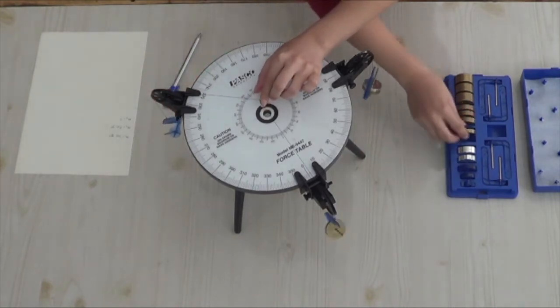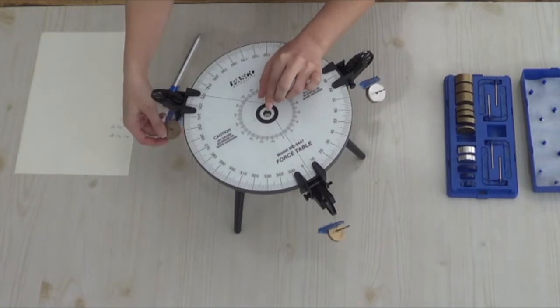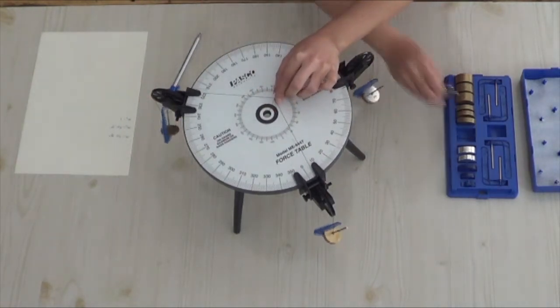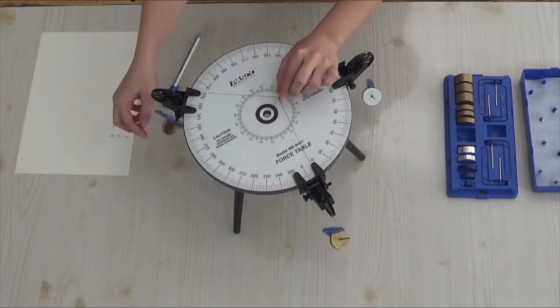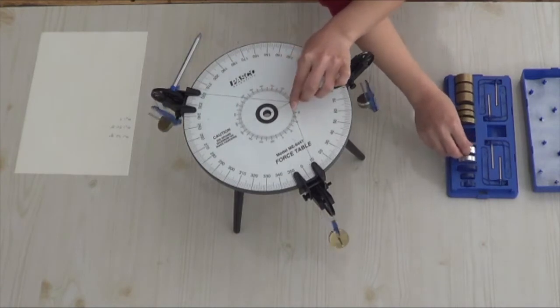At this point, your aim is to make sure that the string that is connected to the knot is not in contact with the force table anyhow. That will imply that the knot is at the center and your system is in equilibrium.